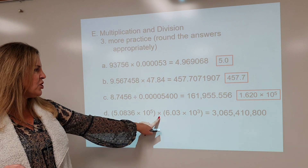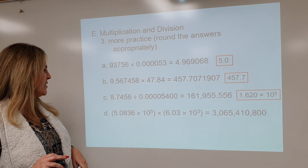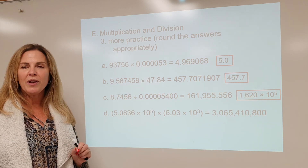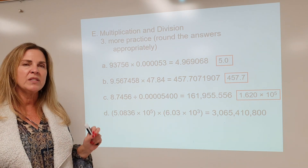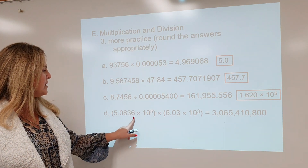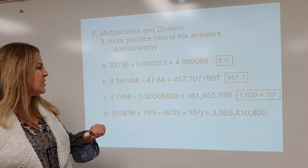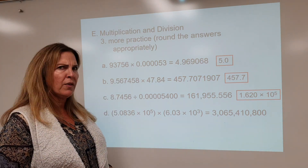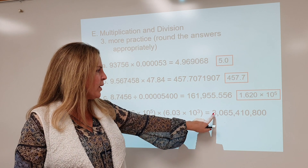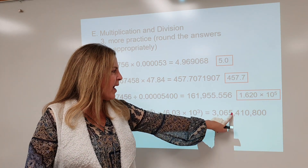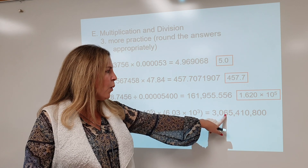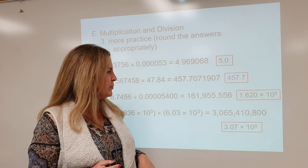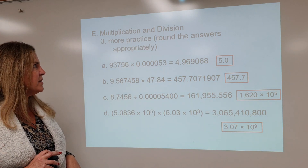Down here we have multiplication with numbers in scientific notation. When you put a number into scientific notation, you have to write all of the significant figures. This number has five significant figures, and this one has three significant figures. So our final answer should have three significant figures. We count one, two, three — that five rounds that up to a seven. This very large number should be written in scientific notation: 3.07 × 10⁹.